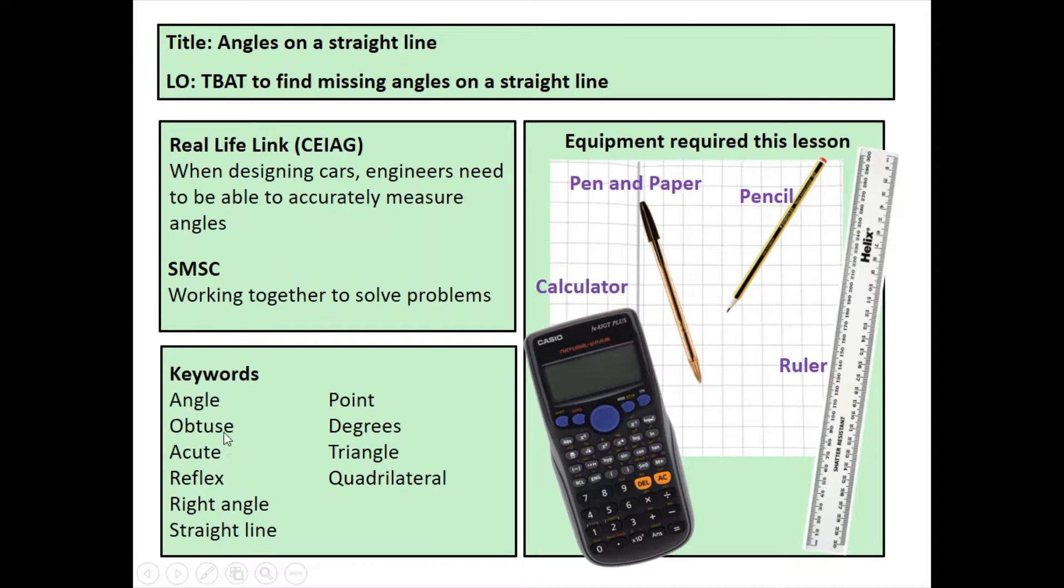Now with the keywords, things like angles, degrees once again is very important, obtuse, acute, reflex, straight line is quite important in this as well. As for the equipment, these are the equipments that you'll require: a pen, a pencil, a ruler, a calculator and so on.